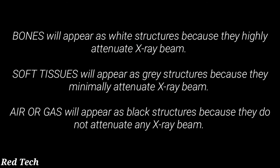Now let's look at examples one by one. Bones appear as white structures in the radiographic image because they highly attenuate the x-ray beam and prohibit it from passing through. Soft tissue appears gray because it minimally attenuates the x-ray beam — it absorbs some and allows some to pass through.